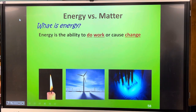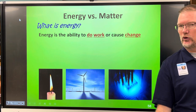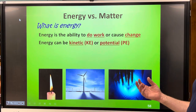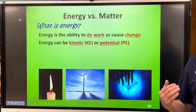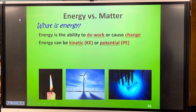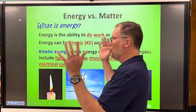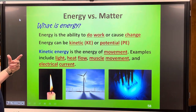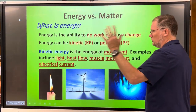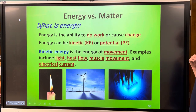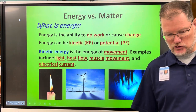What is energy? You learned this in physical science — energy is the ability to do work or cause change. It can be kinetic energy (KE) or potential energy (PE). Kinetic energy is the energy of movement, so anything that's moving has kinetic energy. Examples are light, heat, flow, muscle movement, and electrical current.